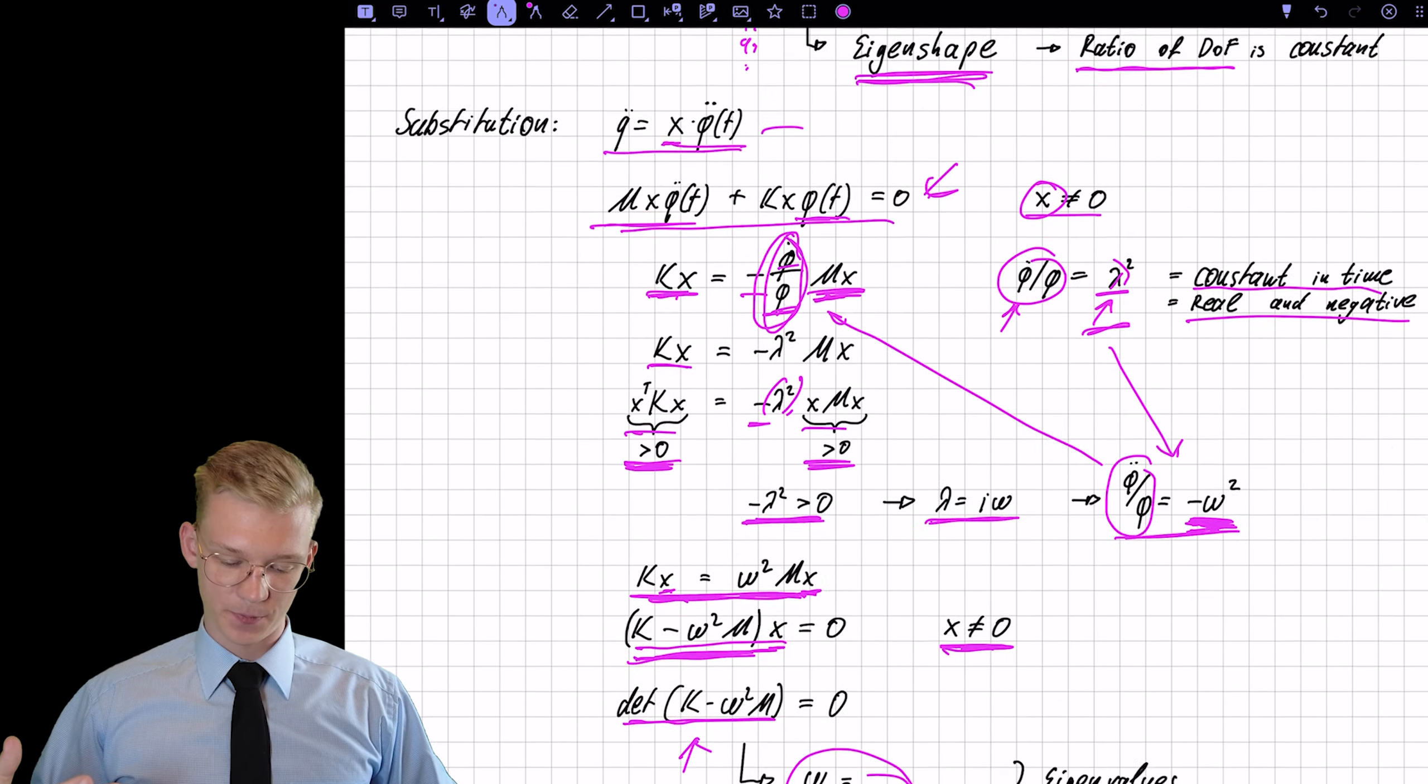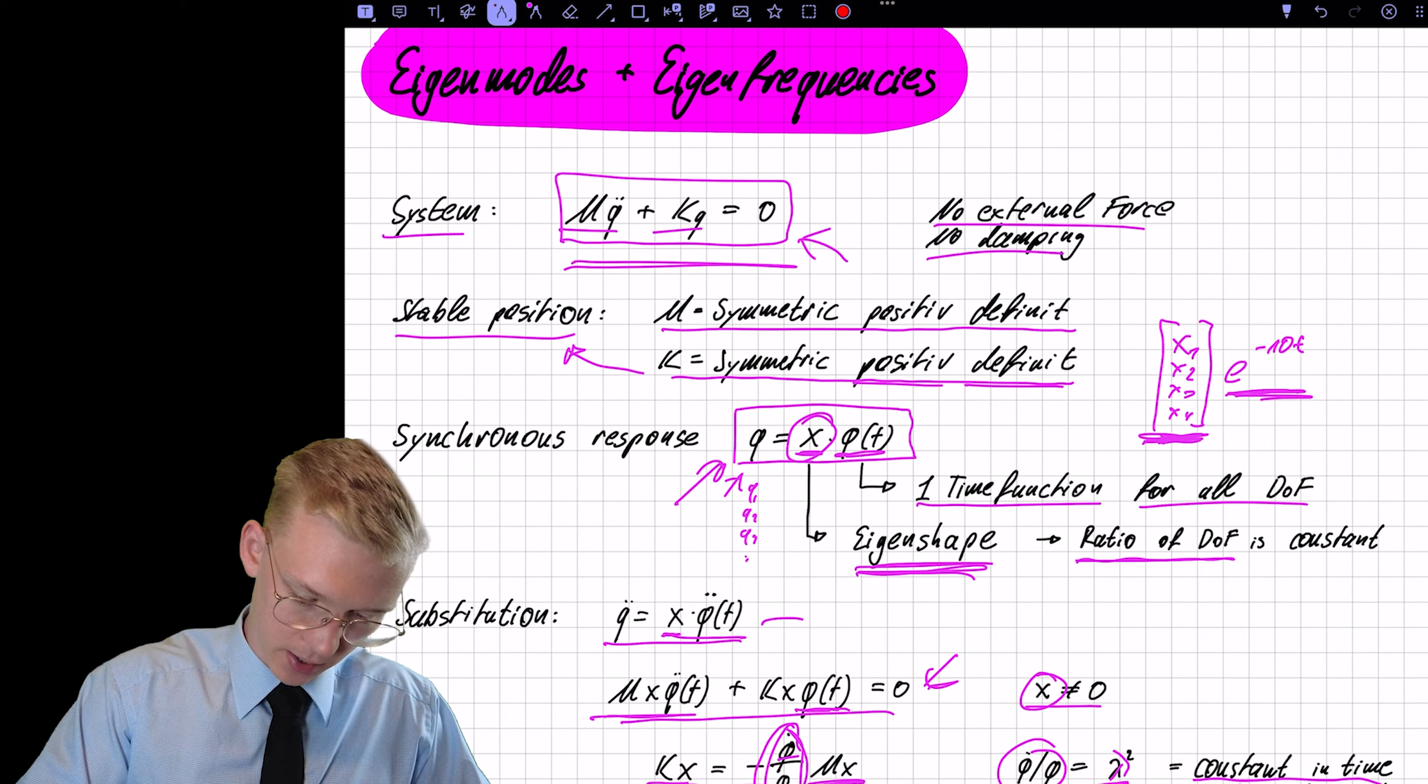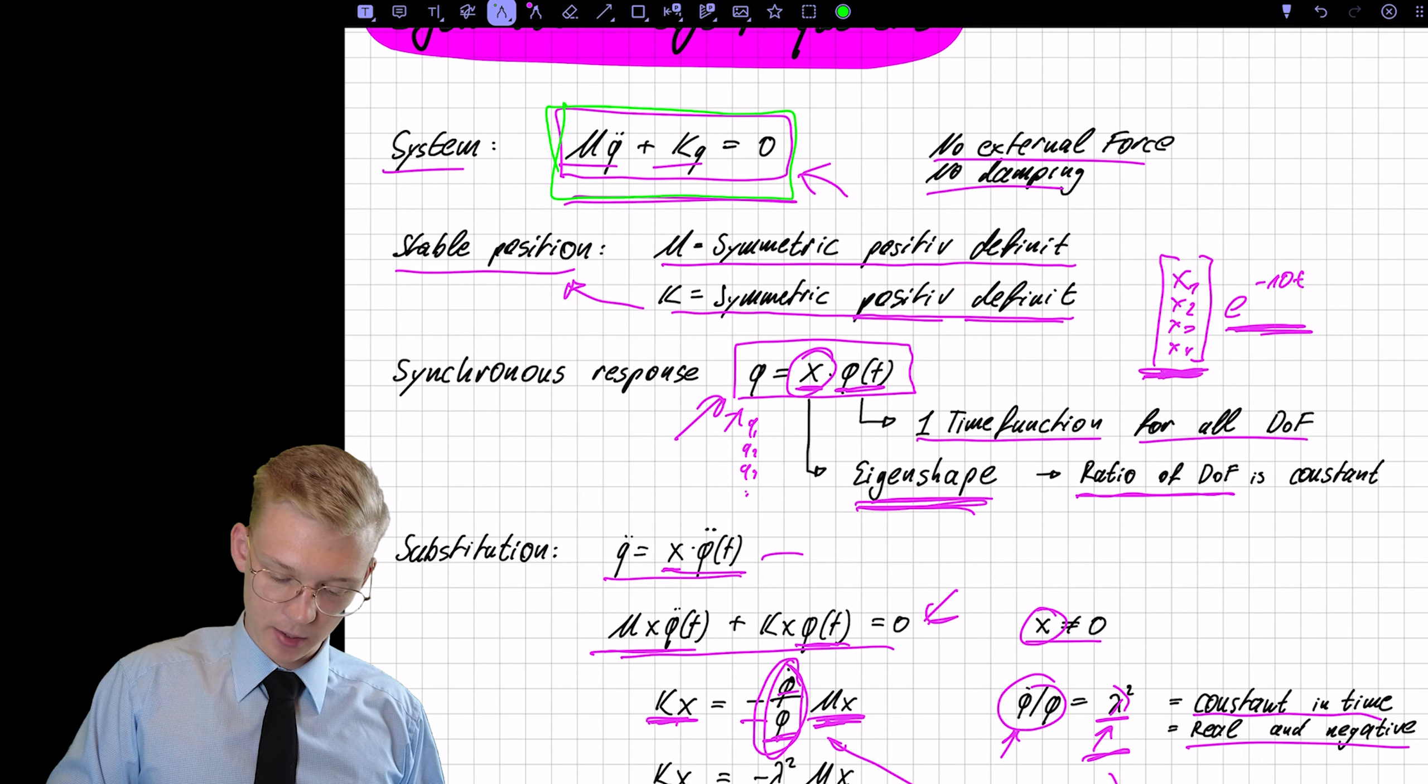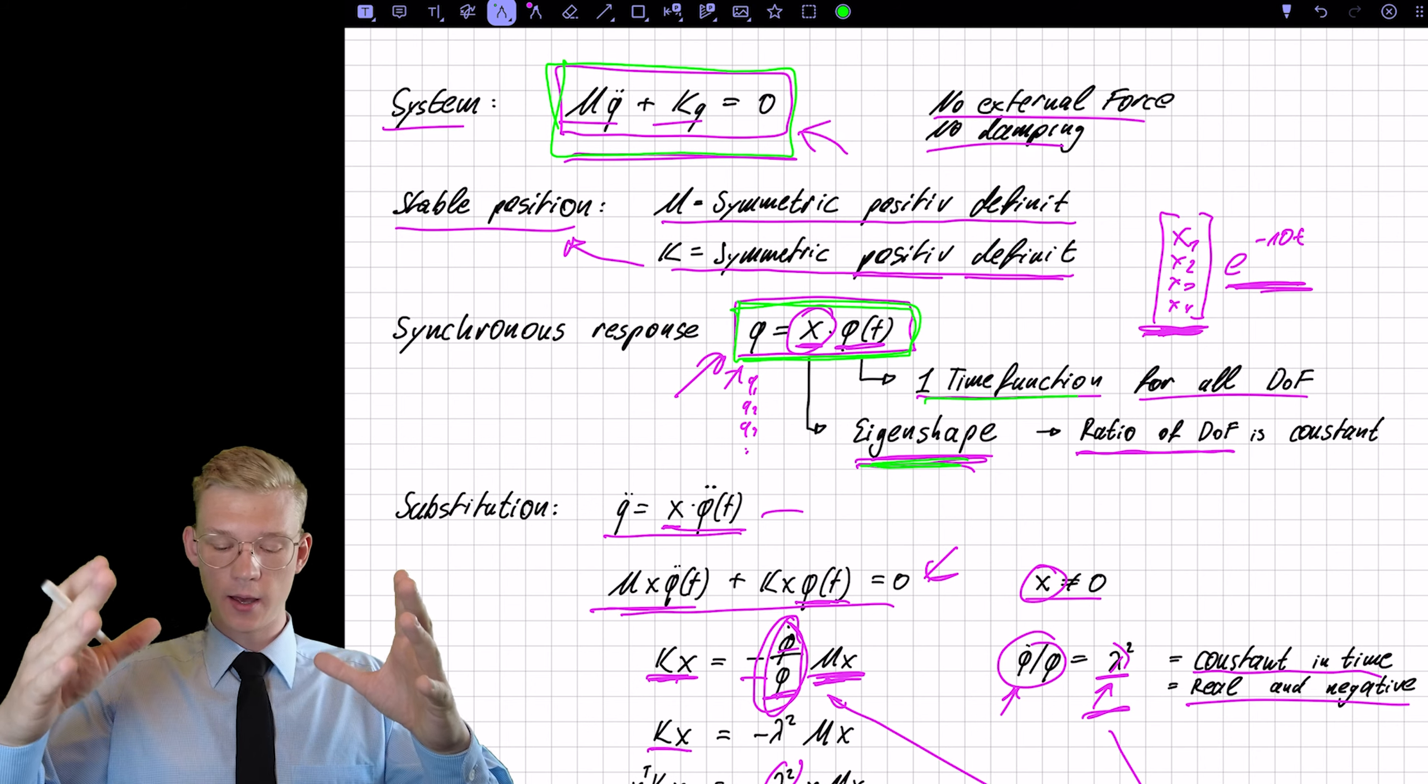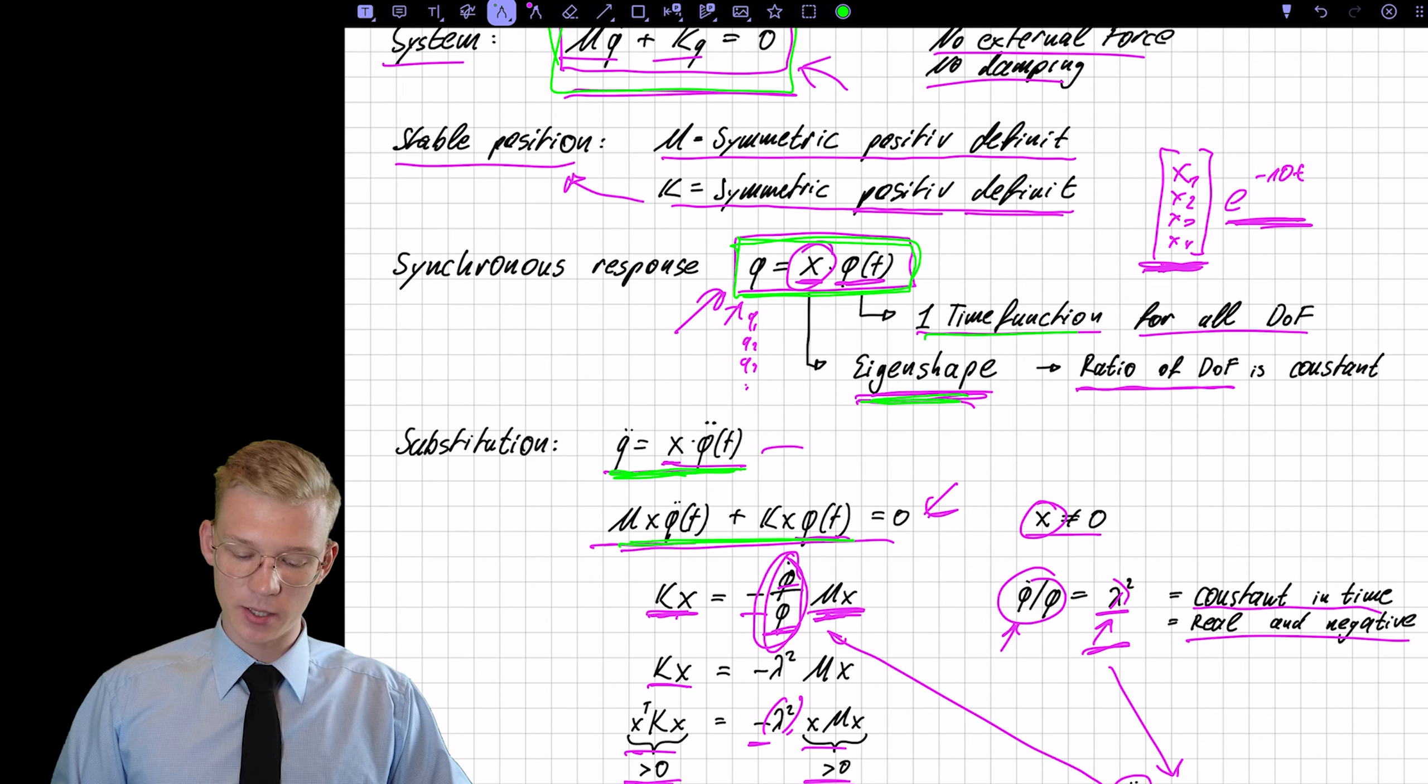Let's recap what we did so far. So this is a lot and this is also very important to understand. We had our system. It's a linear system around a stable configuration. We propose that this response will look something like this. We have an eigen shape and we have a time function that is modulating the eigen shape at once. So all degrees of freedom are changed with the same time function.